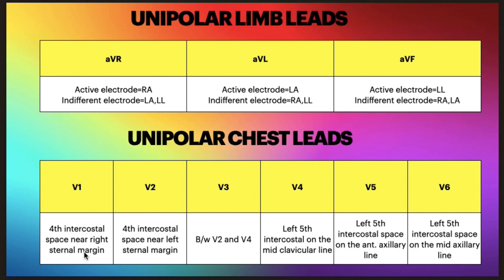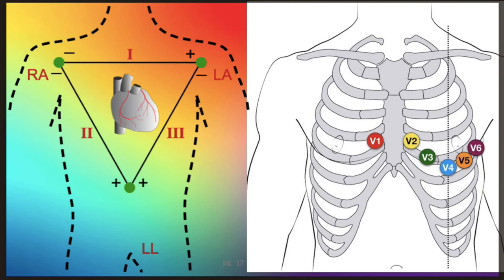V1 is placed in the fourth intercostal space near the right sternal margin. V2 is placed in the fourth intercostal space near the left sternal margin. V3 is placed between V2 and V4. V4 is placed in the left fifth intercostal space at the mid-clavicular line. V5 is placed in the left fifth intercostal space at the anterior axillary line. V6 is placed in the left fifth intercostal space at the mid-axillary line.